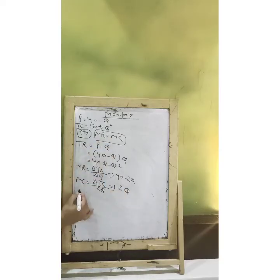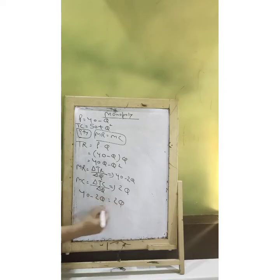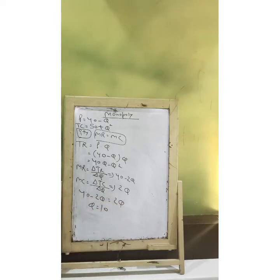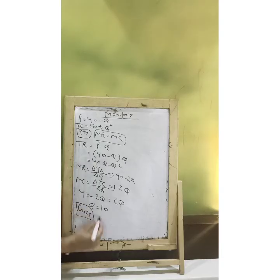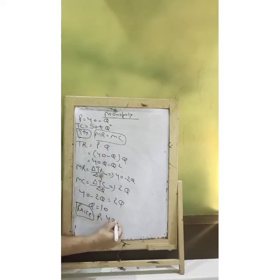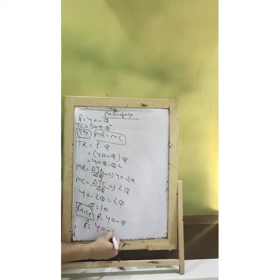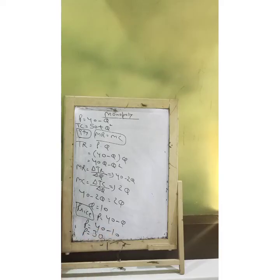Now, using MR equals MC, what I have here is this. Solving it further, it will give us quantity as 10. If I want to solve price, not a problem — you have the price function here which is 40 minus Q. Q is 10, so your price is 30.